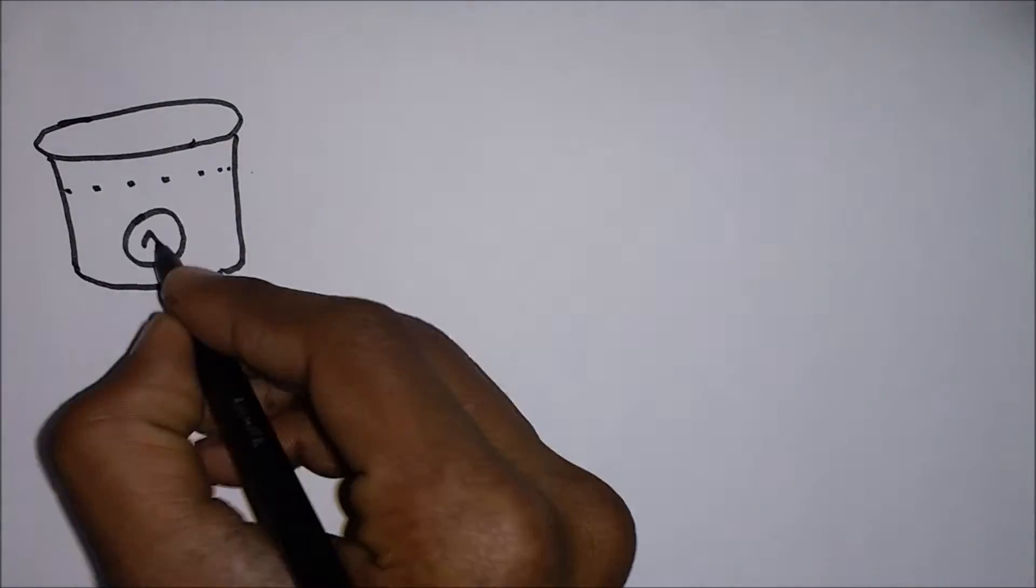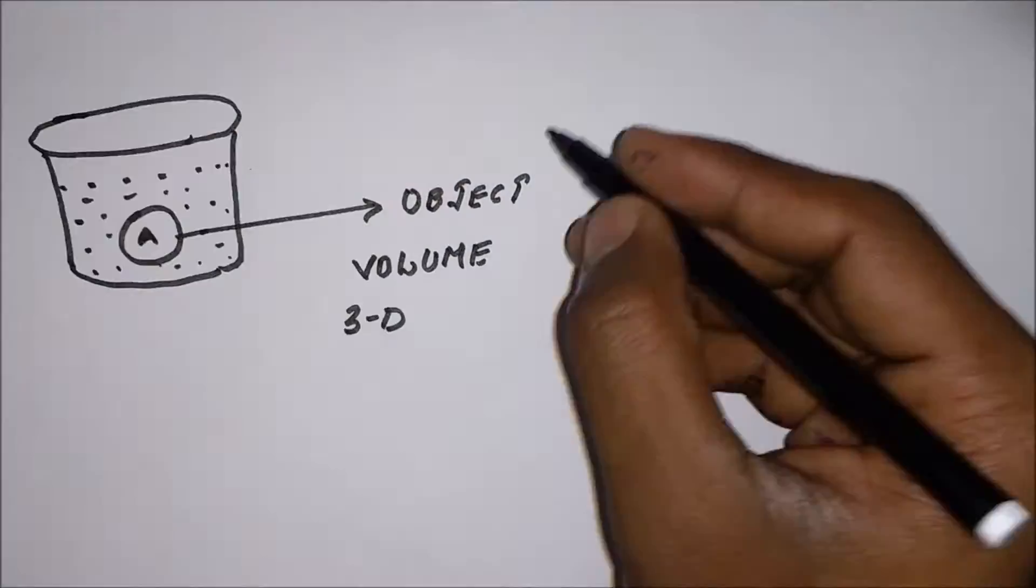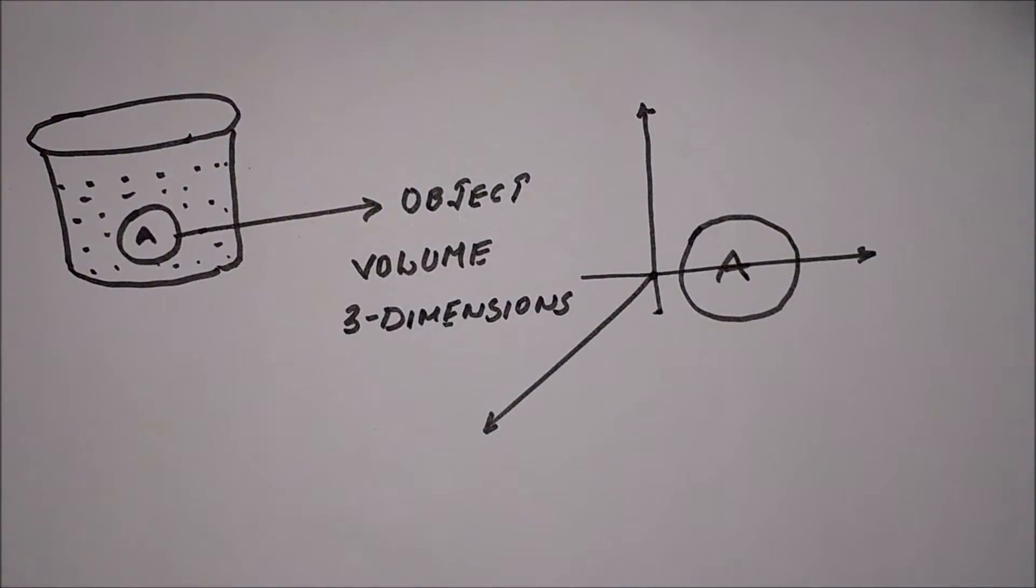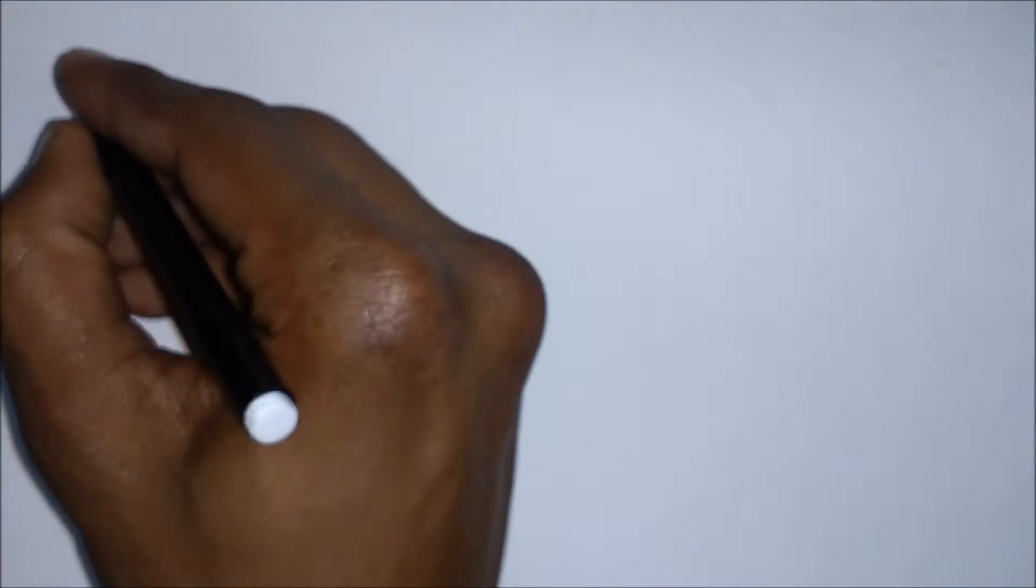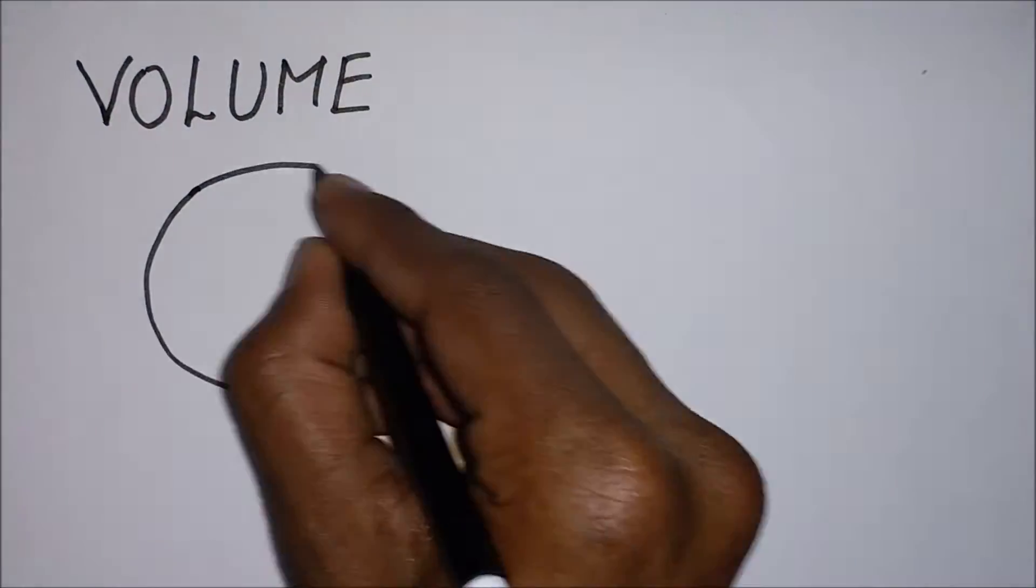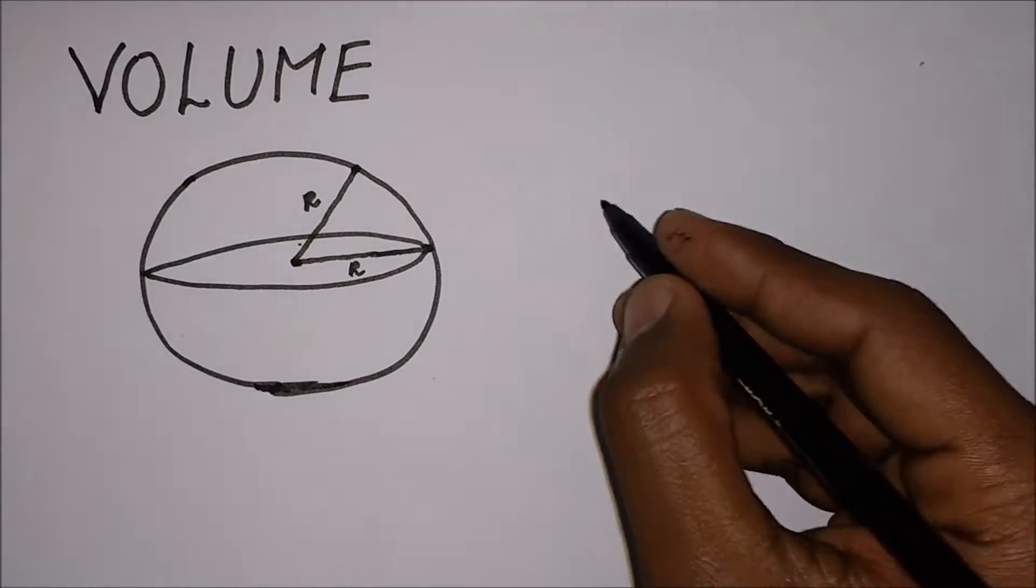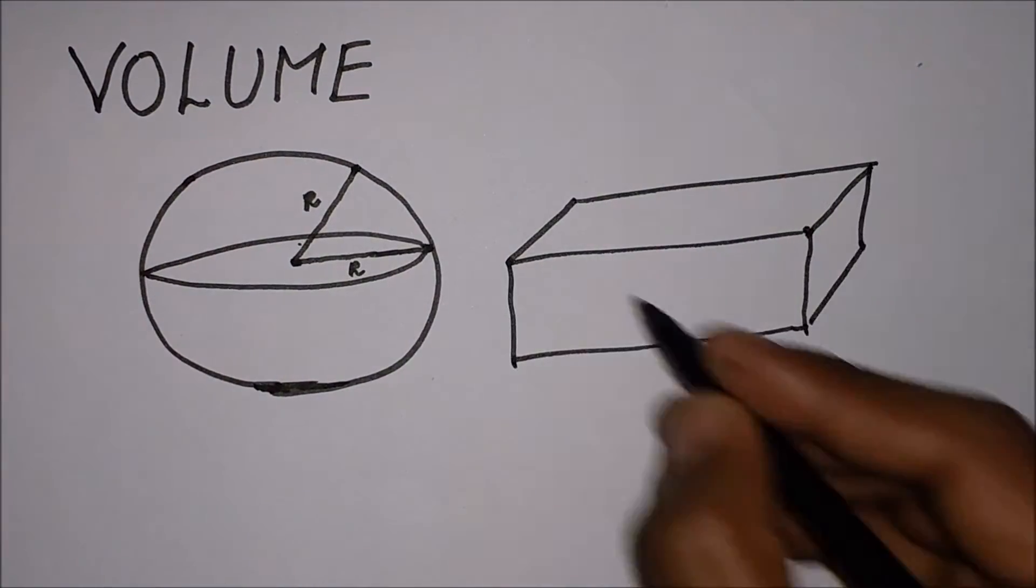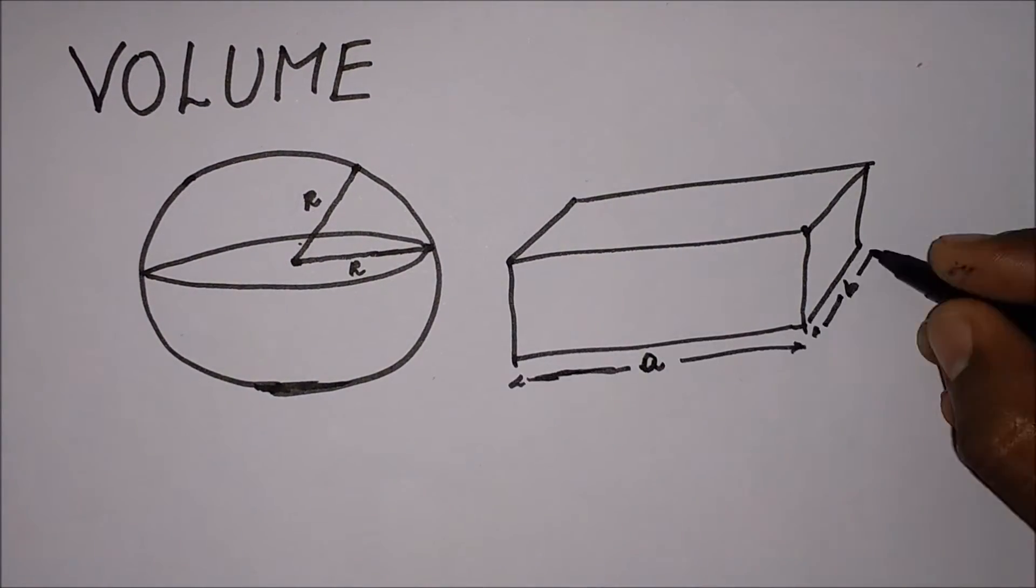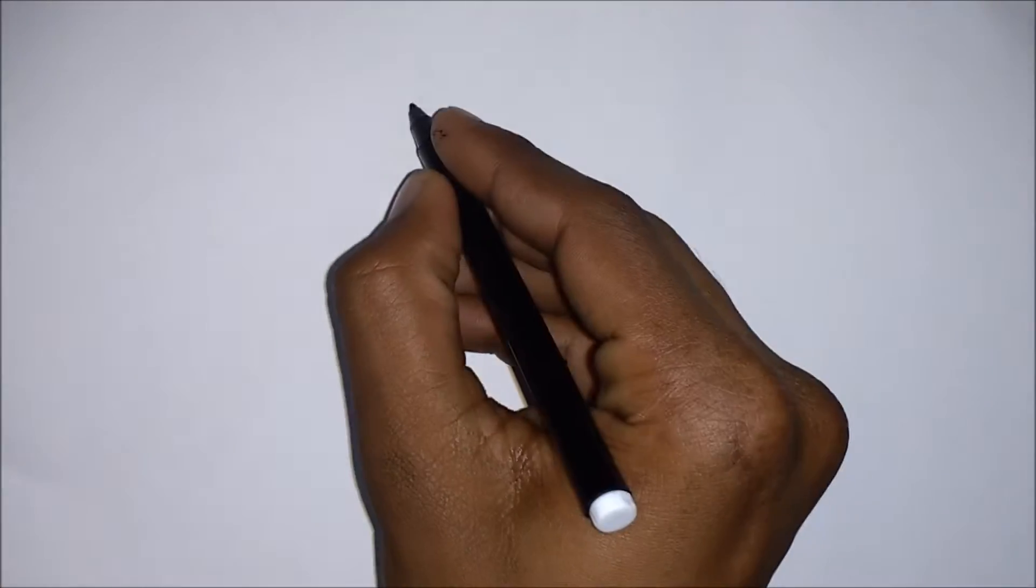Now consider volume. Volume is the amount of space occupied by any physical object. From our intuition, we know that volume is measured using three factors. So we can say that it has three dimensions. Hence, we can conclude that dimension is a factor whose measure defines the particular physical quantity.